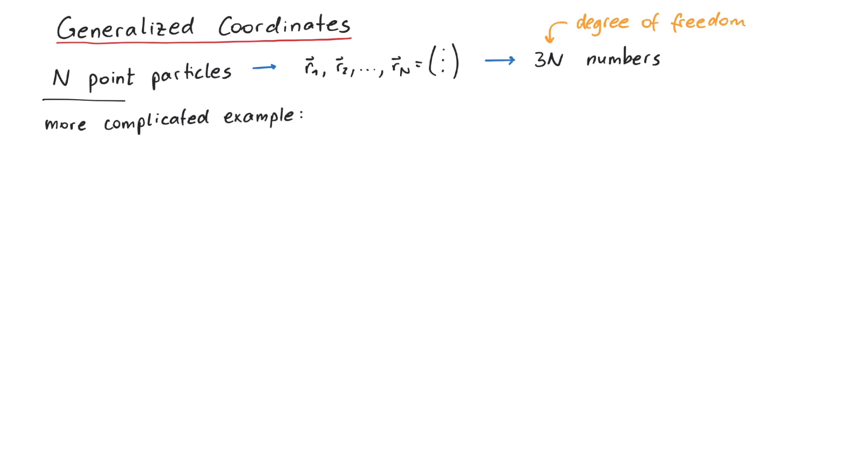Let's consider this example. We have a block that can slide left and right and is connected to a spring. Attached to this block is a pendulum of fixed length, which can swing freely left and right.